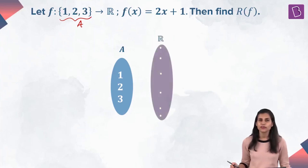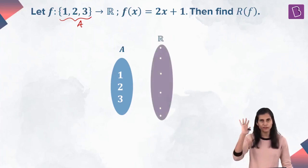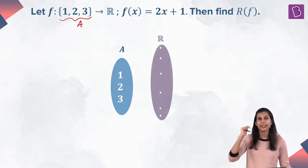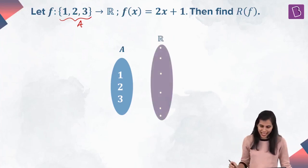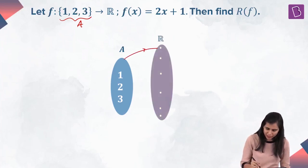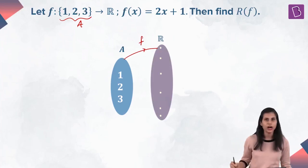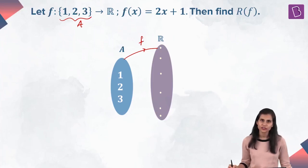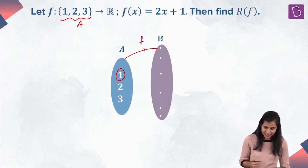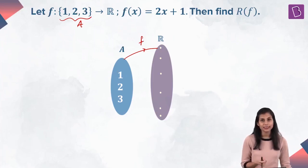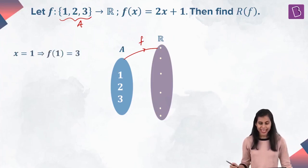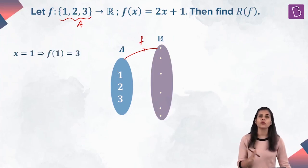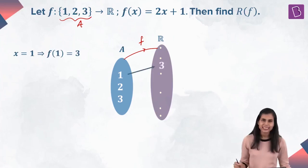Next, the co-domain of this function is the set of all reals, consisting of infinitely many members. I've represented them by dots and I have my function defined from A to R. Now when x is equal to 1, f(x) = 2×1 + 1, that gives you 3. That means 1 gets mapped to 3.